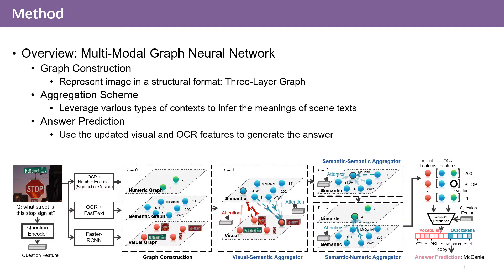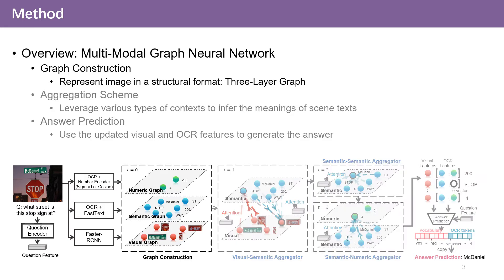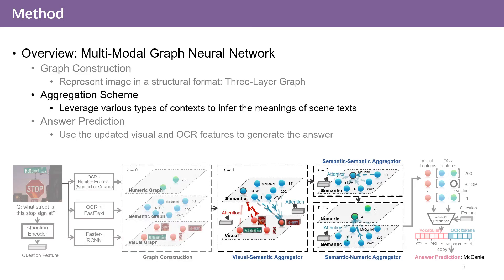To solve these challenges, we introduce a Multimodal Graph Neural Network. To clearly represent the multimodal information, we use a structured format — a three-layer graph — to represent the image. We also propose new aggregation schemes to use multimodal contexts to infer the meanings of words.